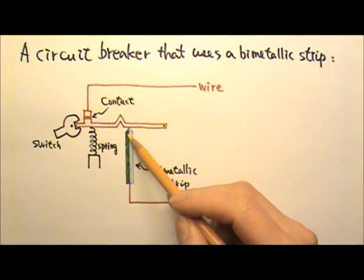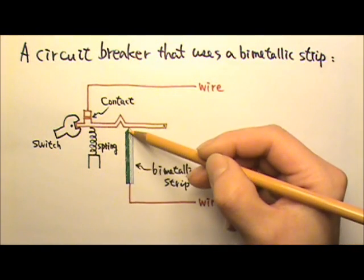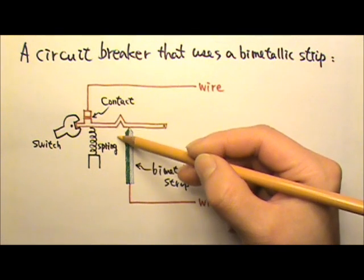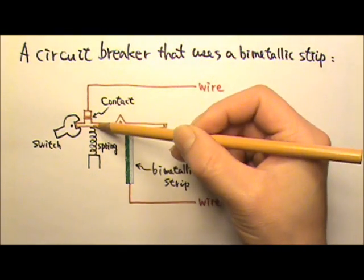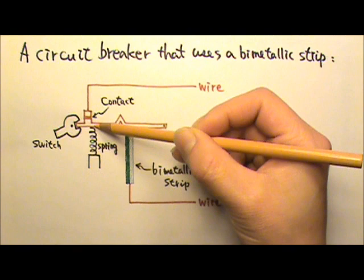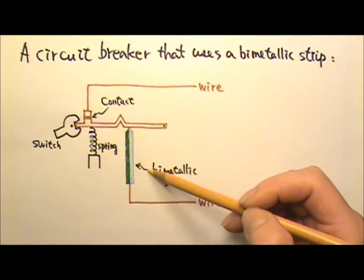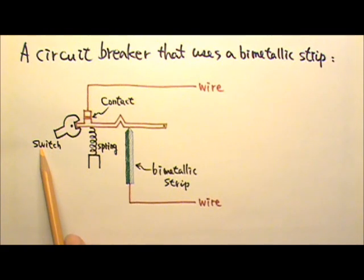For a 15 amp breaker, when the current reaches 15 amps, the bimetallic strip curls to here and this conducting bar drops, the circuit loses contact and all appliances in this circuit lose power. Then we have to wait for the strip to cool and flick the switch to turn the circuit back on.